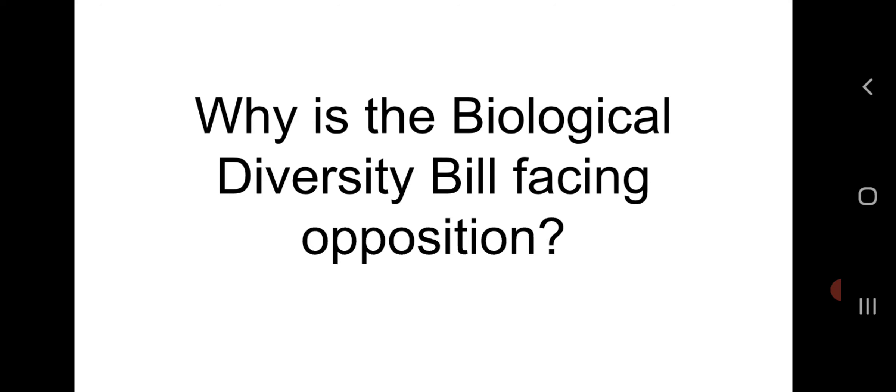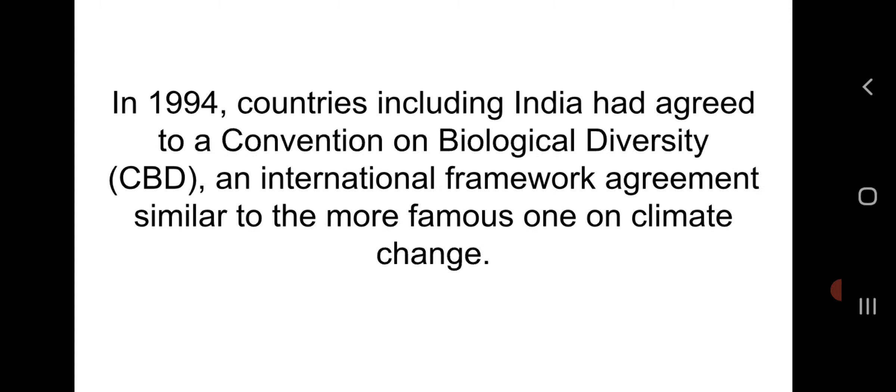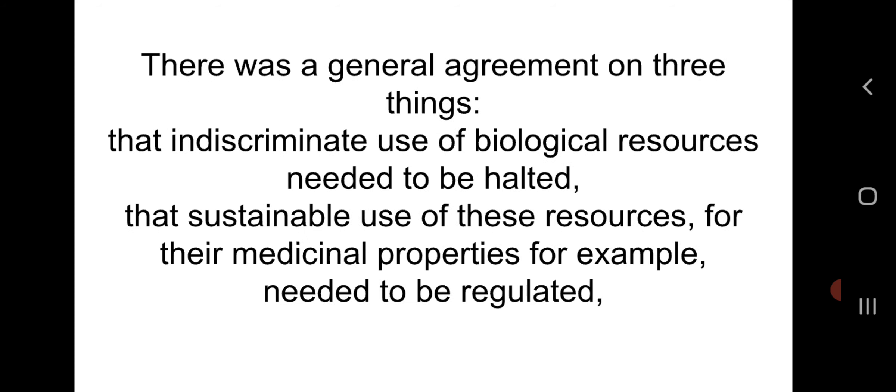The second most important topic of today: why is the Biological Diversity Bill facing opposition? On 1st August, the Rajya Sabha passed the Biological Diversity Amendment Bill 2021 amid a walkout by the opposition parties, about a week after it was cleared by the Lok Sabha. It is related with GS Paper 3, on page 12 of The Hindu newspaper. The core concept is that in 1994, countries including India agreed to a Convention on Biological Diversity (CBD), an international framework agreement similar to the more famous one on climate change.